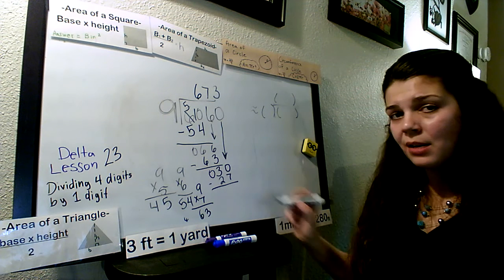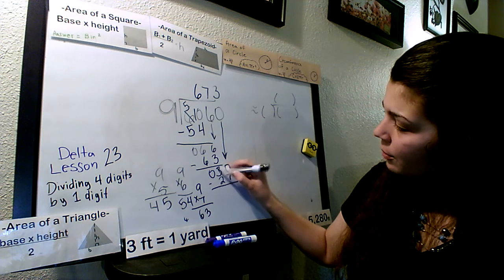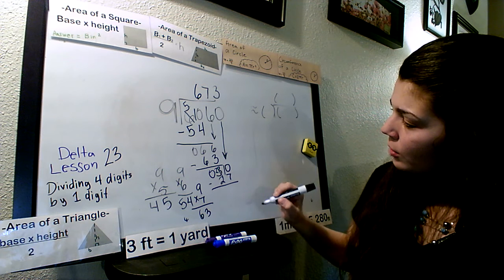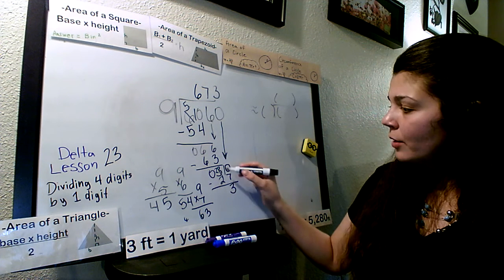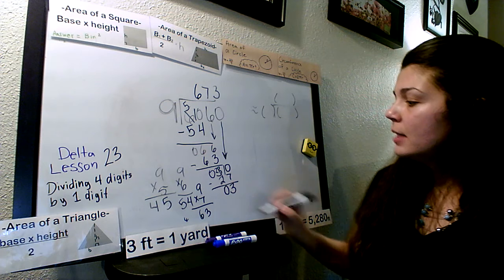Can we take 7 from 0? Nope. We have to borrow. He becomes a 2 and he becomes a 10. 10 minus 7. 10 minus 7 is 3. 2 minus 2 is 0.